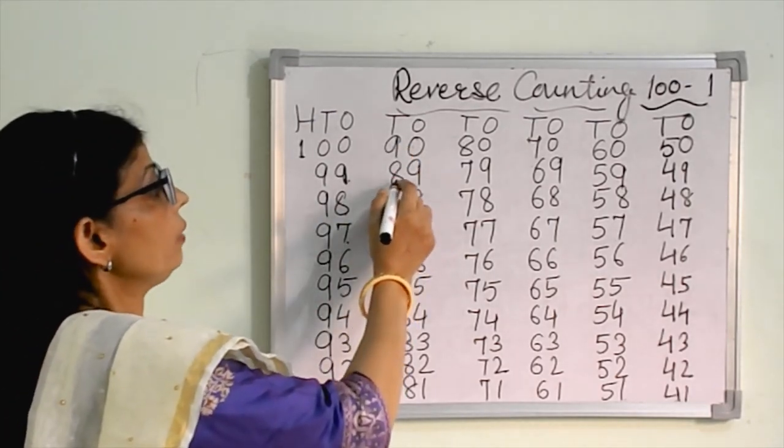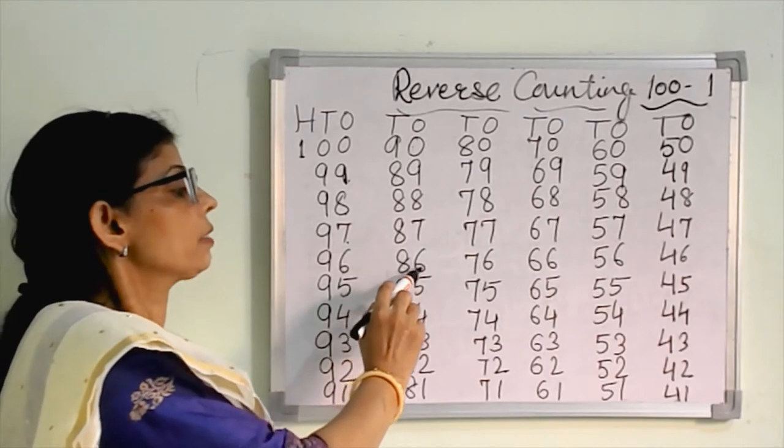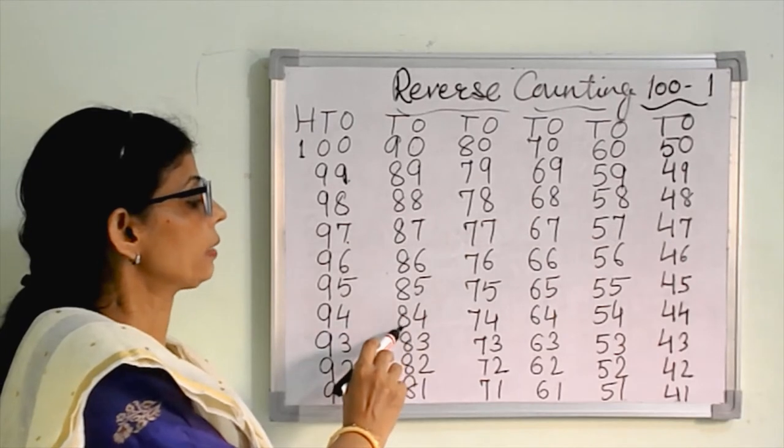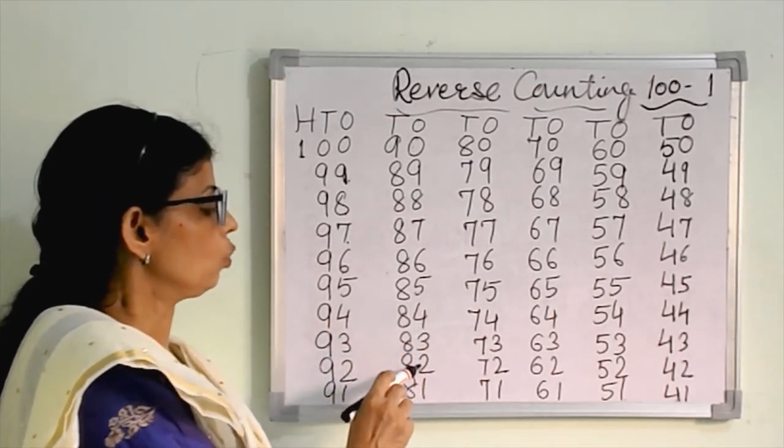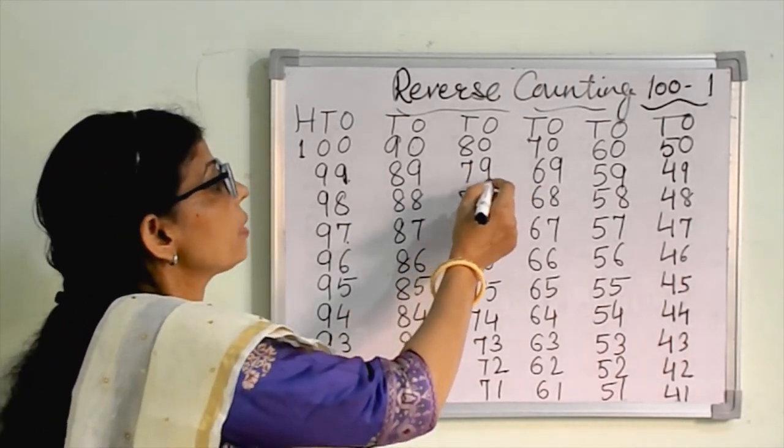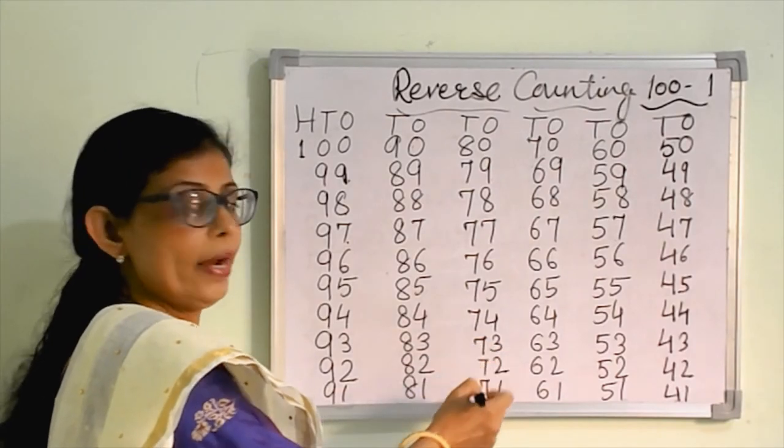Eighty-one. The next line here is eighty. What comes before eighty? Seventy-nine. You have to write in reverse: seventy-nine, seventy-eight, seventy-seven, seventy-six, seventy-five, seventy-four, seventy-three, seventy-two, and the last one, seventy-one.